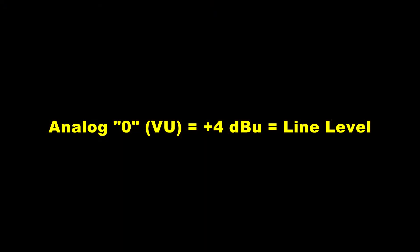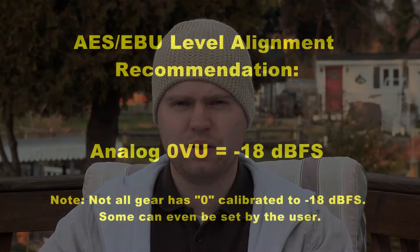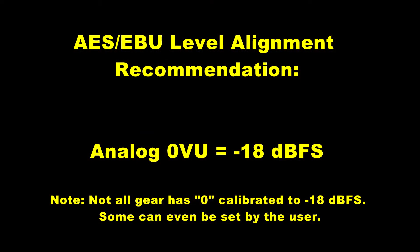So where do you set these levels? The answer is not so simple. Back in the analog age, zero was zero, but zero also had a reference of plus four DBU, which is typical for professional gear in America. In other countries it's slightly different, but regardless, it's called line level. Analog zero is line level. When digital came out, the smart engineers put analog zero at digital approximately negative 18 dB full scale.